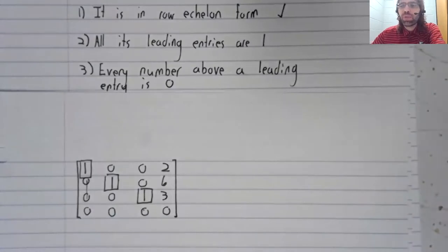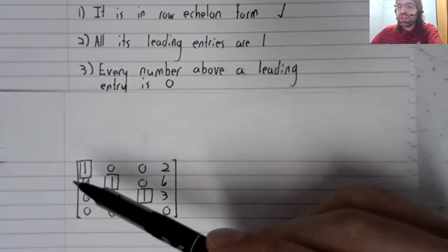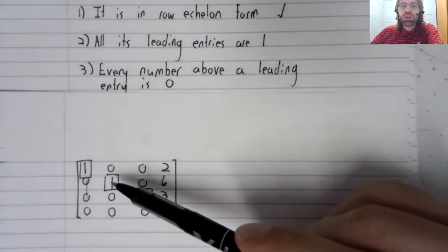Remember that although when we stated the definition of row echelon form, we gave three conditions, two of those conditions were equivalent. So the reason we didn't bother to check that the leading entries go to the right,